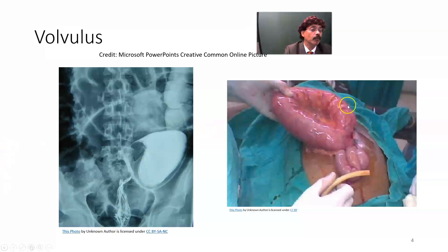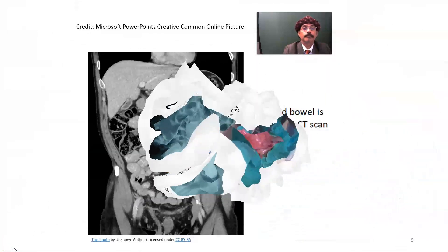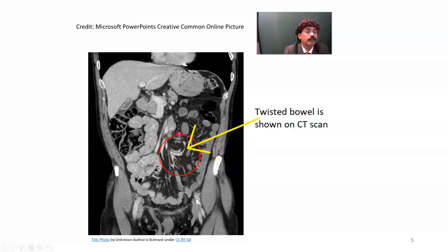This is the volvulus of the large intestine, primarily the sigmoid colon. Here is another image showing the whirl sign. The whirl sign is very important and is a very sensitive test for the diagnosis of volvulus.